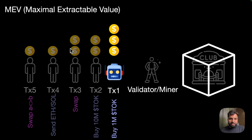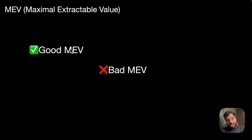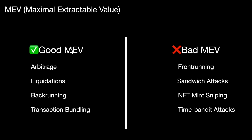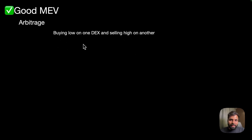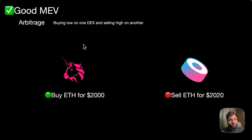There are various kinds of MEV scenarios which generally can be classified into two categories. The first is good MEV, where MEV practices are value-aligned and system-stabilizing. On the other hand, there can be bad MEV practices which can be predatory and user-harming. Now let's talk about arbitrage. In this practice, an asset is bought for low on one DEX and sold for high on another DEX. For example, a bot sees Ethereum for $2000 on Uniswap and $2020 on Sushiswap, so it buys Ethereum for $2000 on Uniswap and sells it for $2020 on Sushiswap, generating profit and helping stabilize the price.